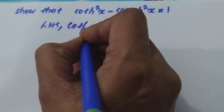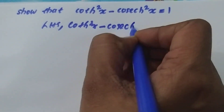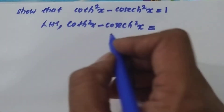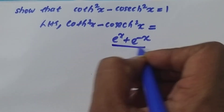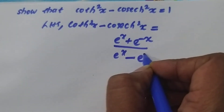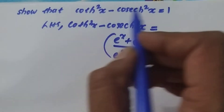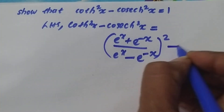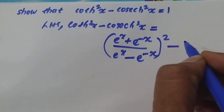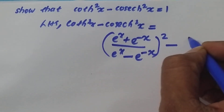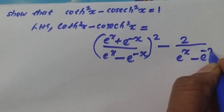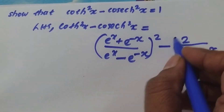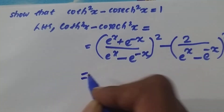LHS: coth²x minus cosech²x. Applying definitions — coth x is defined as (e^x + e^(-x)) / (e^x - e^(-x)), that whole expression squared. Minus cosech x in the definition applied: 2 / (e^x - e^(-x)), the whole squared.